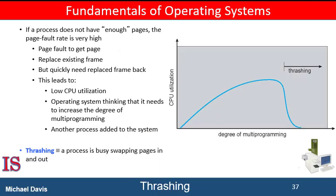Consider what happens if a process does not have the minimum number of frames it needs to support the pages of a working set. A working set is a set of instructions that tend to work together and sometimes tend to repeat. In this situation, the process will quickly page fault. At this point, it must replace some page. However, since all these pages in this working set are in active use, it must replace a page that will be needed again right away. Consequently, it faults again very soon, and again and again, replacing pages that it must bring back in immediately. This high paging activity is called thrashing. A process is thrashing if it spends more time paging than executing. Thrashing results in severe performance problems.